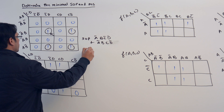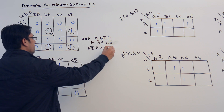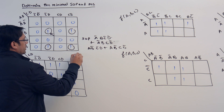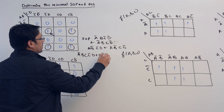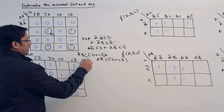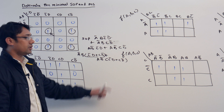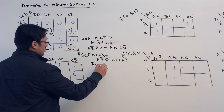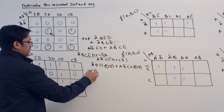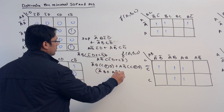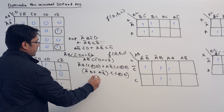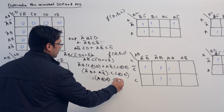This one is denoting AB'C'D, plus this one is denoting AB'CD'. From the first two you can take A'B as common, so it will be A'B(C'D + CD'). From the last two you can take AB' as common, so inside we will have C'D + CD'. You can clearly see this is C XOR D, and this is also C XOR D. So the equation becomes A'B(C XOR D) + AB'(C XOR D). Taking C XOR D as common gives (A'B + AB')(C XOR D), which is (A XOR B)(C XOR D).